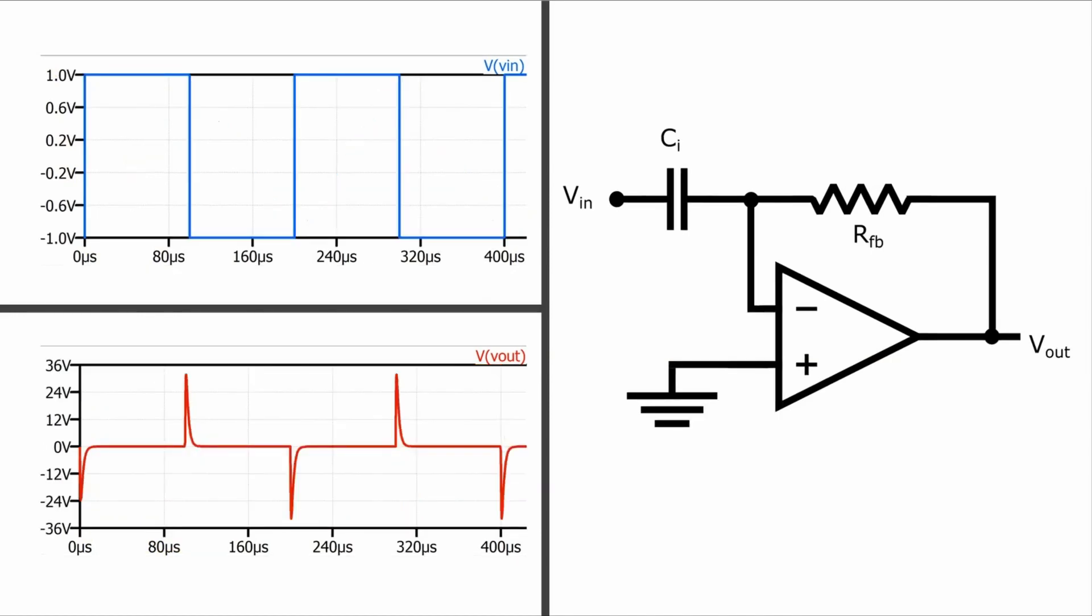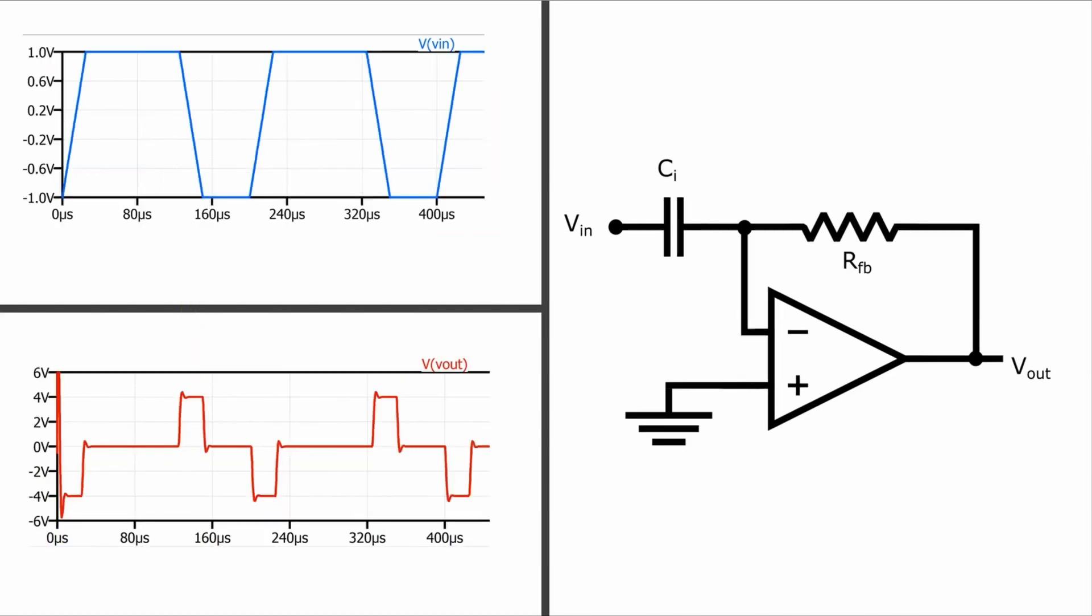It can also be used for detecting the edges of square waves, because square waves are never perfectly square. There's always going to be some rise time. So again, we're going to have a line here with a fairly steep slope. And when you take the derivative of that, you are going to get a spike at that slope.